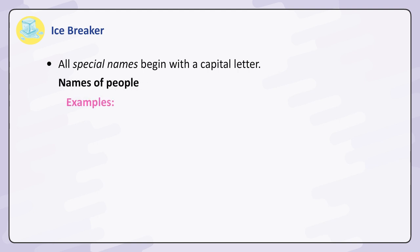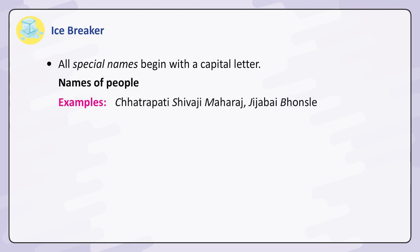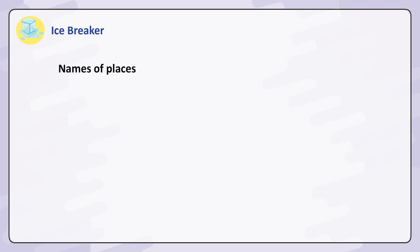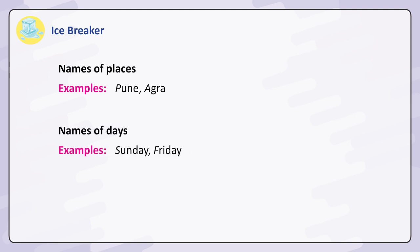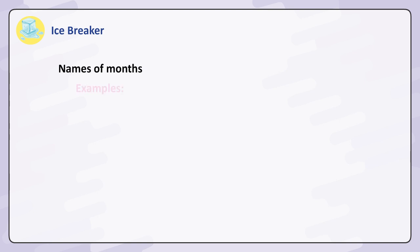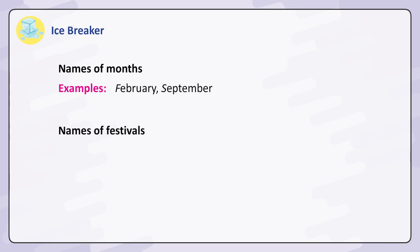Names of people — Examples: Chatrapati Shivaji Maharaj, Jeeja Bhai Bhonsle. Names of pets — Examples: Bruno, Fluffy. Names of places — Examples: Pune, Agra. Names of days — Examples: Sunday, Friday. Names of months — Examples: February, September.